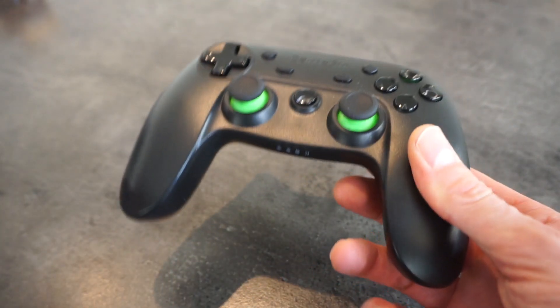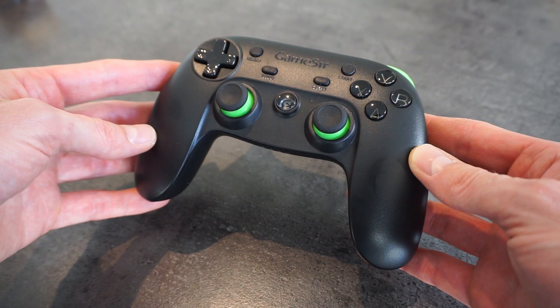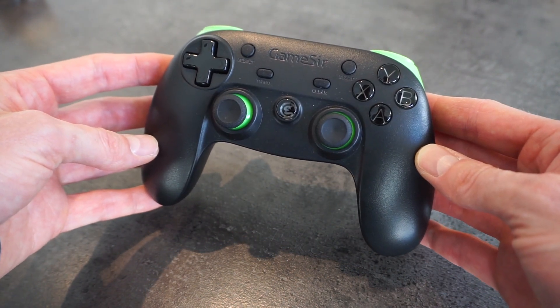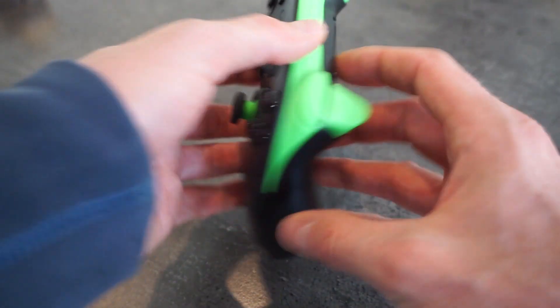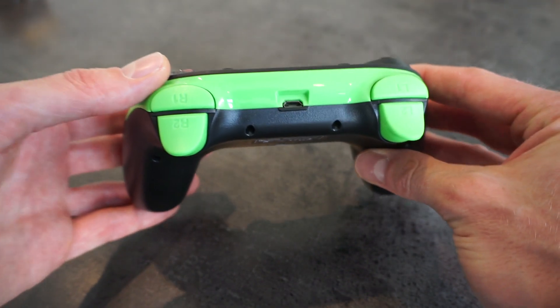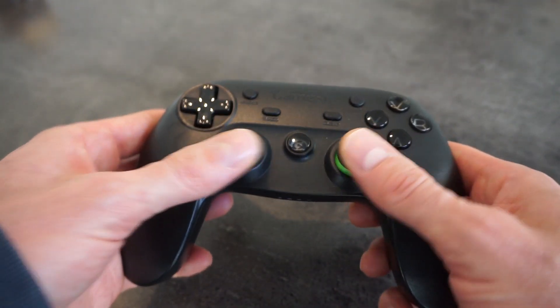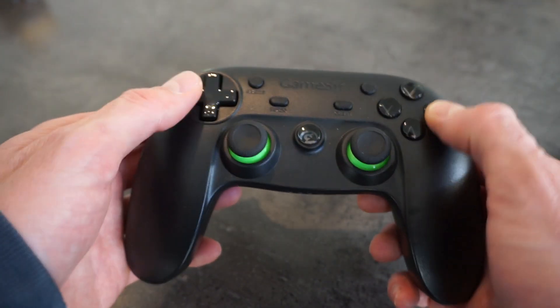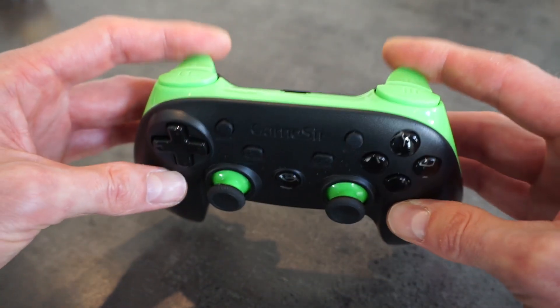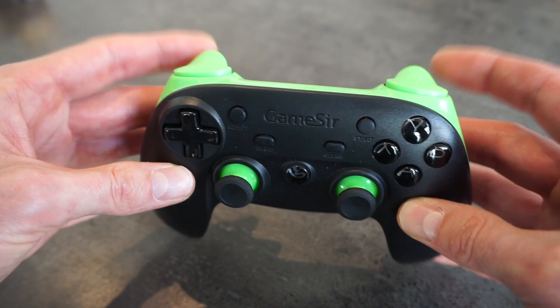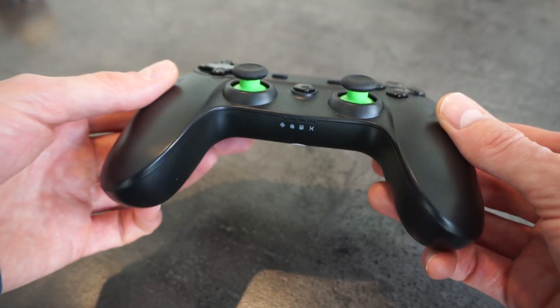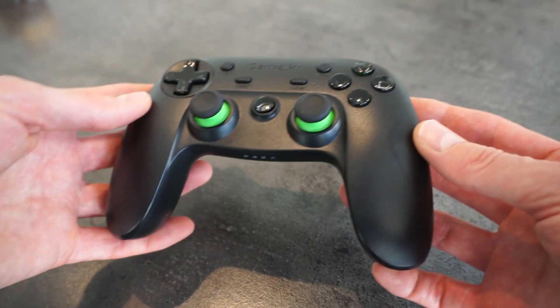Another method is by using the game controller. This can be connected to the USB host module with a wireless dongle or a USB cable. The thumbsticks and the buttons can be used to move the arm and activate the effectors. The game controller has a decent build quality and the buttons and thumbsticks have a nice feel to them. Most importantly, it's actually quite intuitive to move the robot arm around this way.